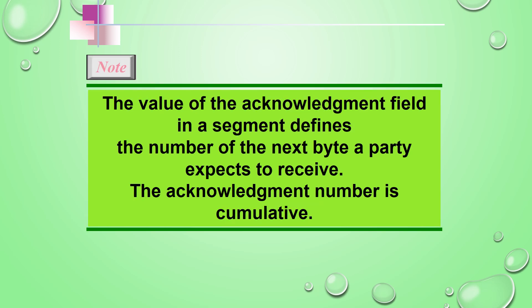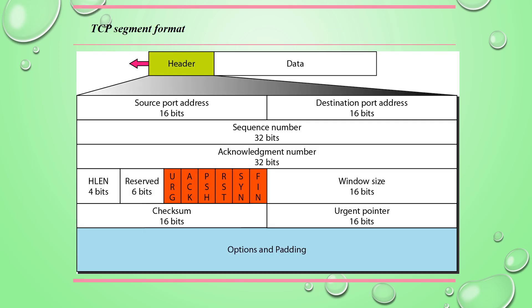The value of the acknowledgement field in the segment defines the number of the next byte expected, and the acknowledgement number is cumulative — similar to inclusive acknowledgement and piggybacking. The window size is a 16-bit field in the header that defines the size of the window in bytes that the other side must maintain. The maximum value is 65,535 bytes. This value is normally referred to as the receiving window and is determined by the receiver; the sender must obey whatever is specified by the receiver.